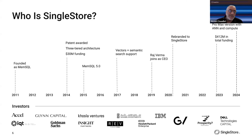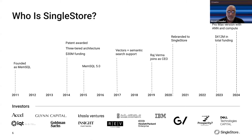Over the last couple of years, we added support for columnar storage, analytics, and vectors as well. If you look at the timeline for 2017, you'll see vectors and semantic search support — we've had that capability for a while and it's been used by customers actually building applications. In terms of number of customers, we are now a US dollars 100 million plus annual recurring revenue, ARR.